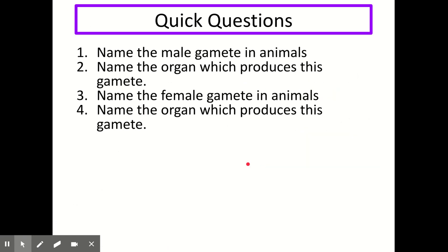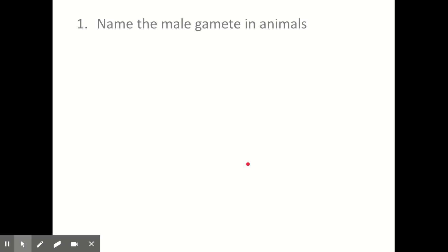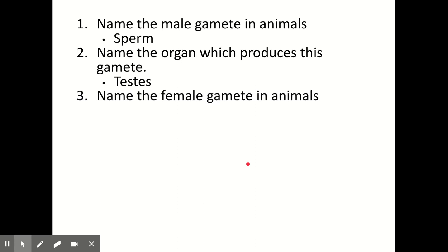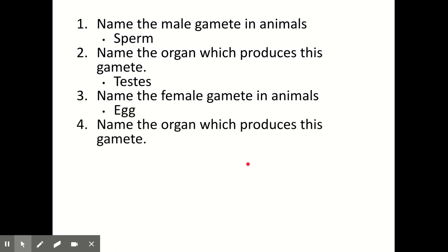Pause the video and try these questions. The male gamete in animals is the sperm, produced in the testes — and you should be able to label that on a diagram. The female gamete in animals is the egg, produced in the ovaries.